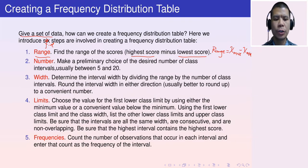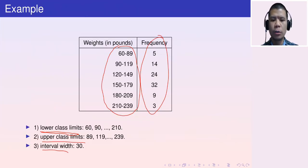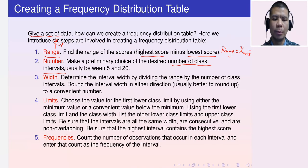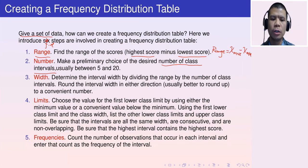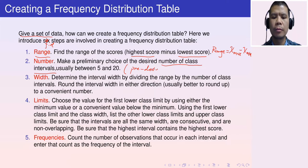Step two is to determine the number of class intervals you want in your frequency distribution table. For instance, in this example we have six intervals. The number of class intervals is usually between five and twenty, and it is usually predetermined or given.